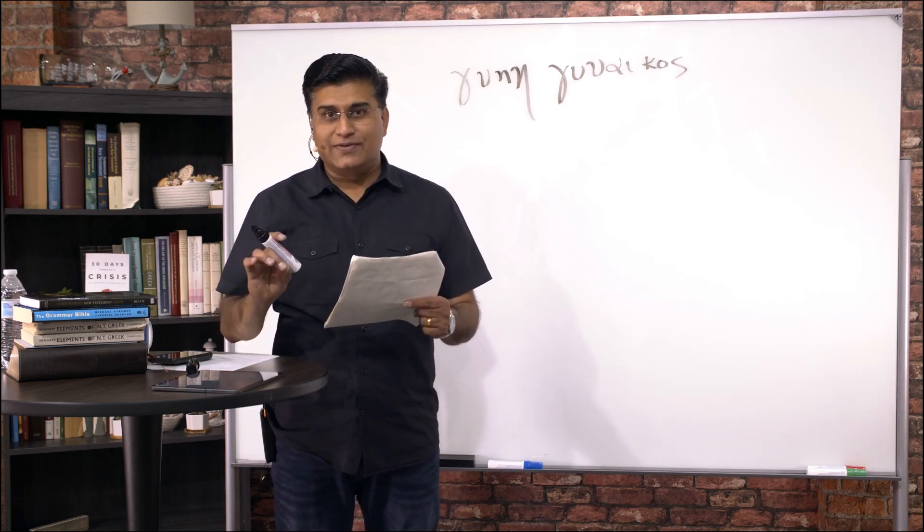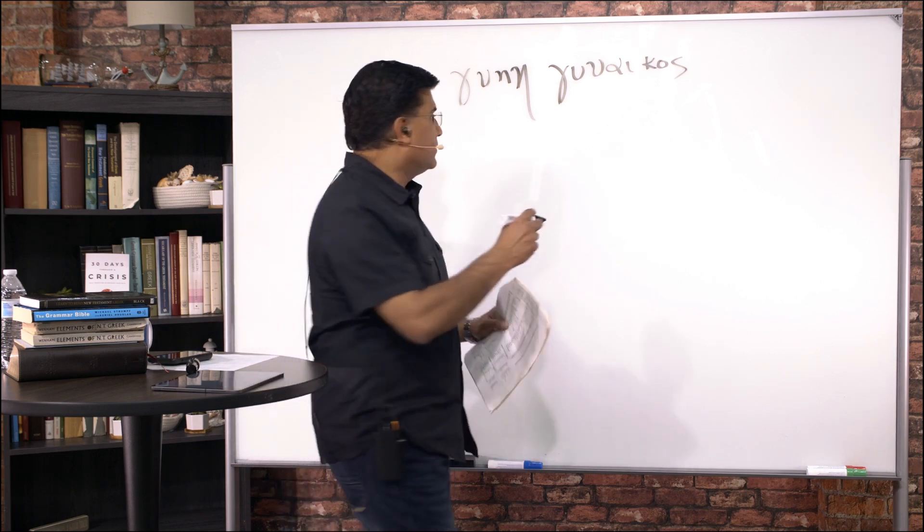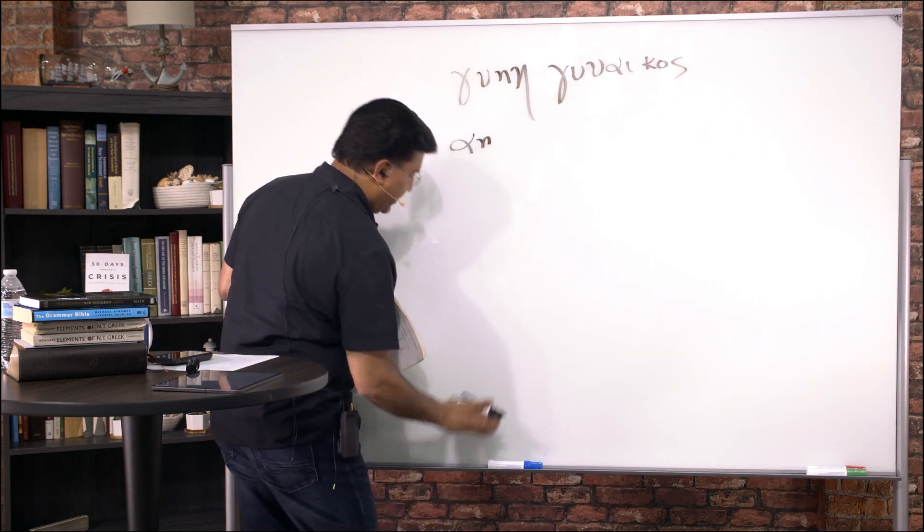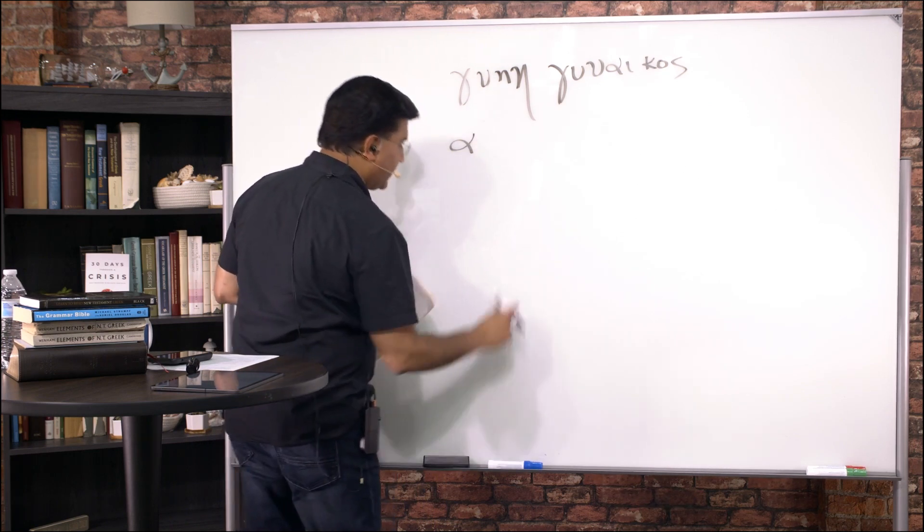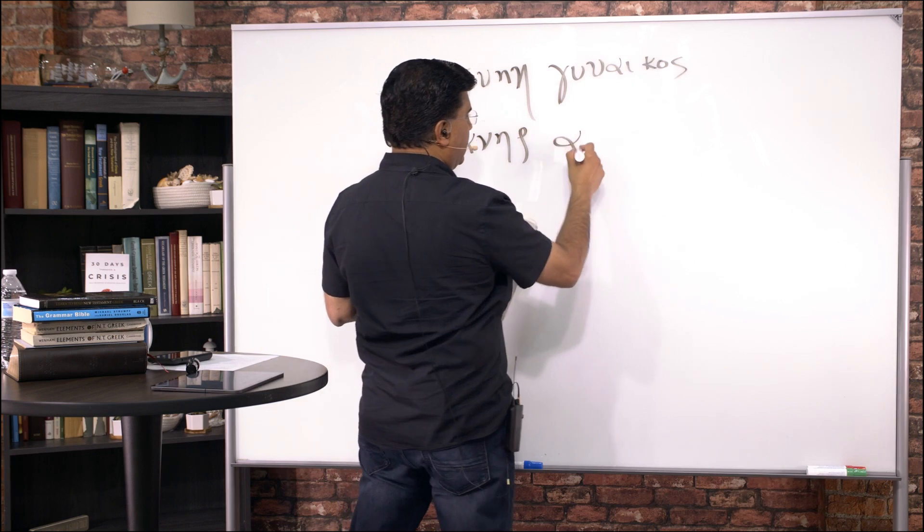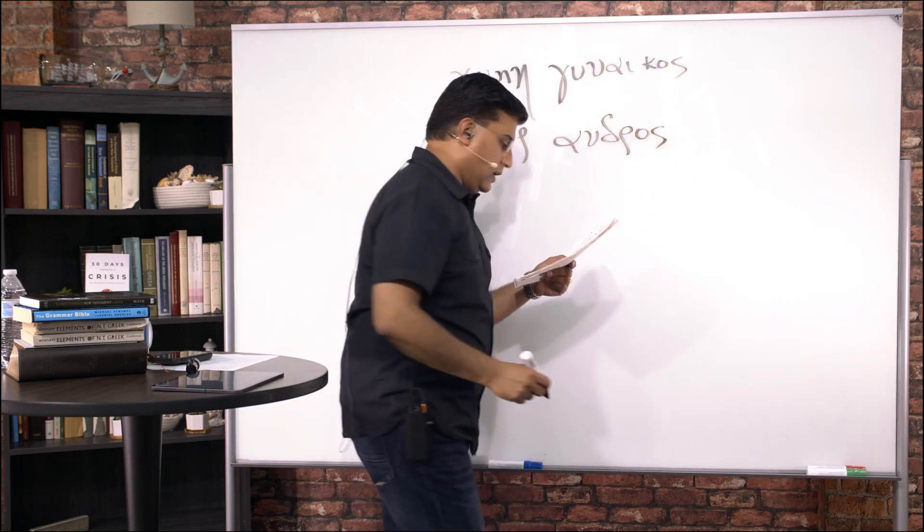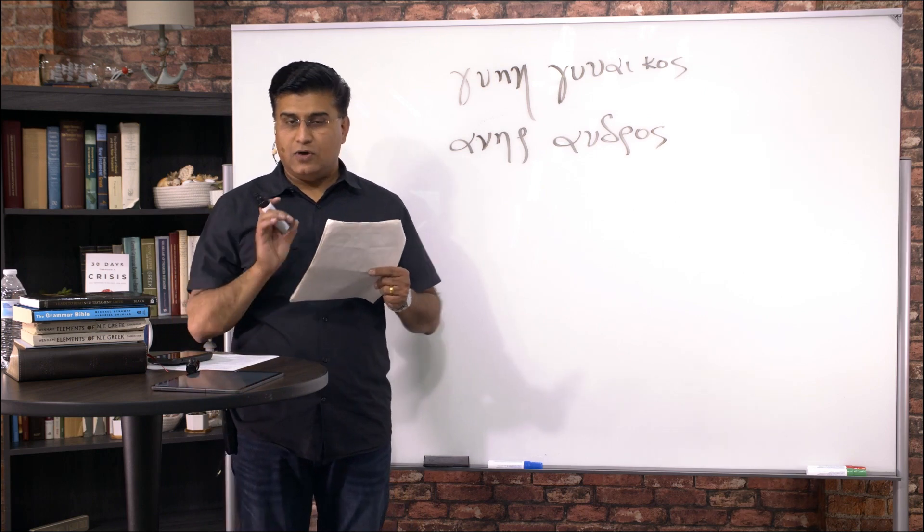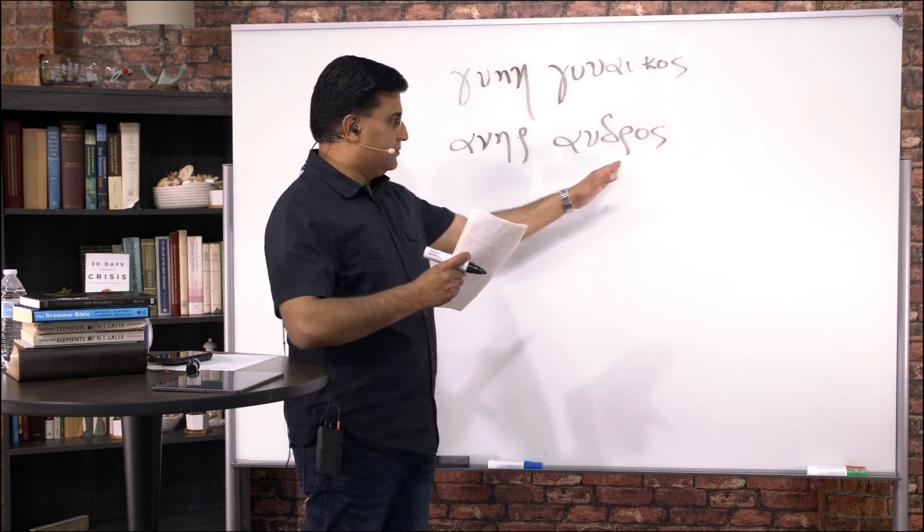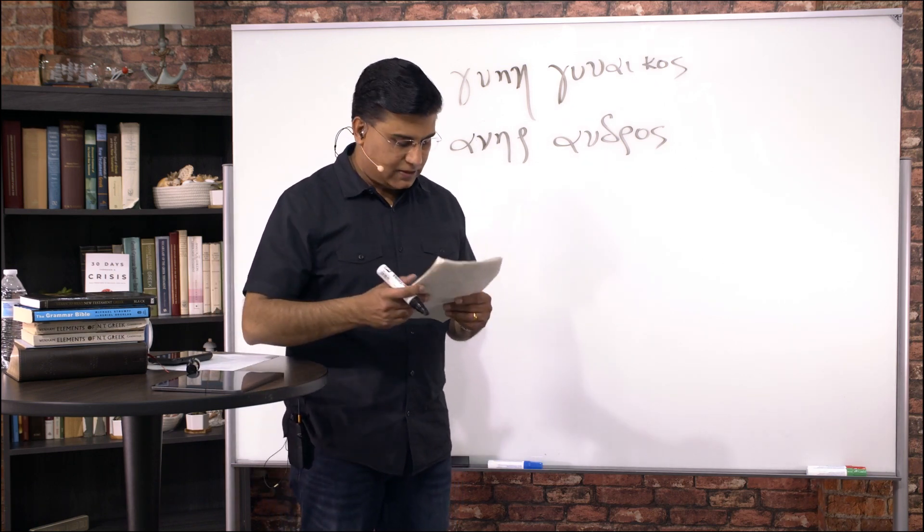Anir andros. Man or husband. Anir. I'm writing an N there. In English. But anir. Andros. Is man. Man or husband. And so you can tell how that word has given us many words in English.